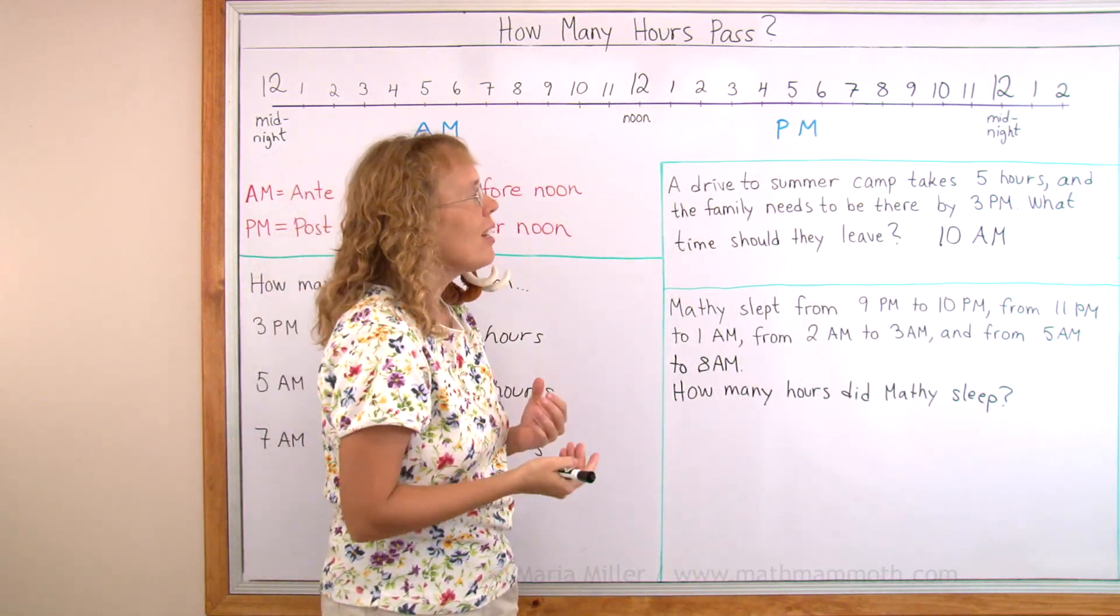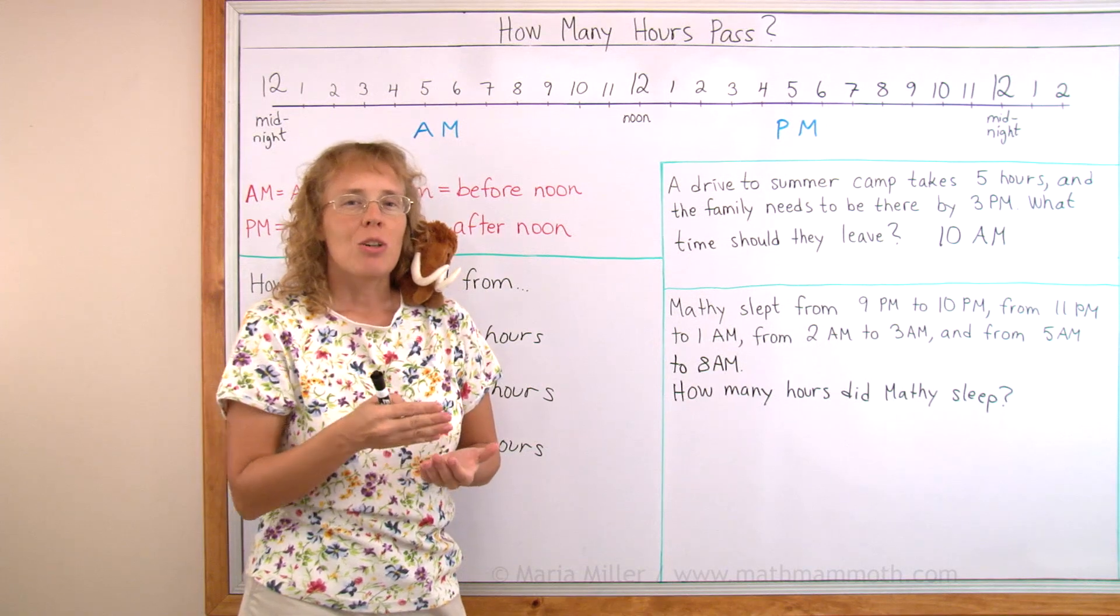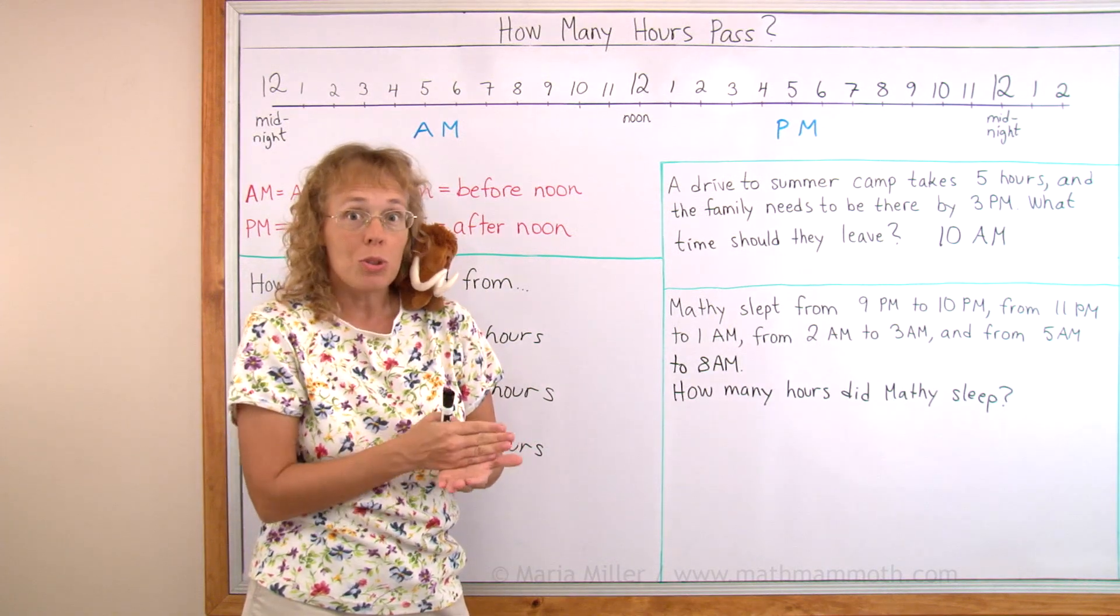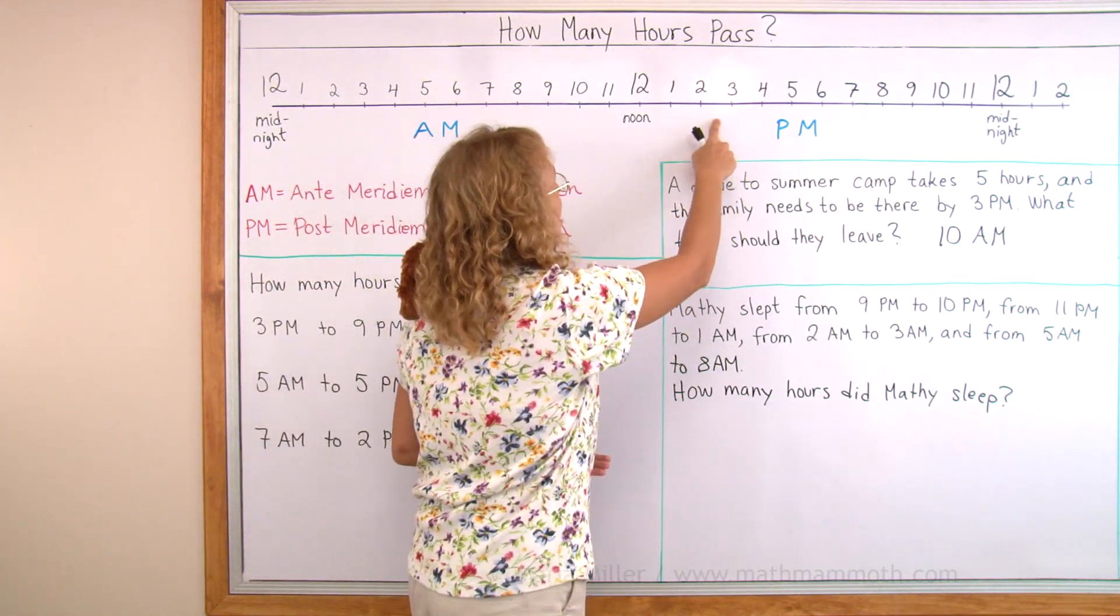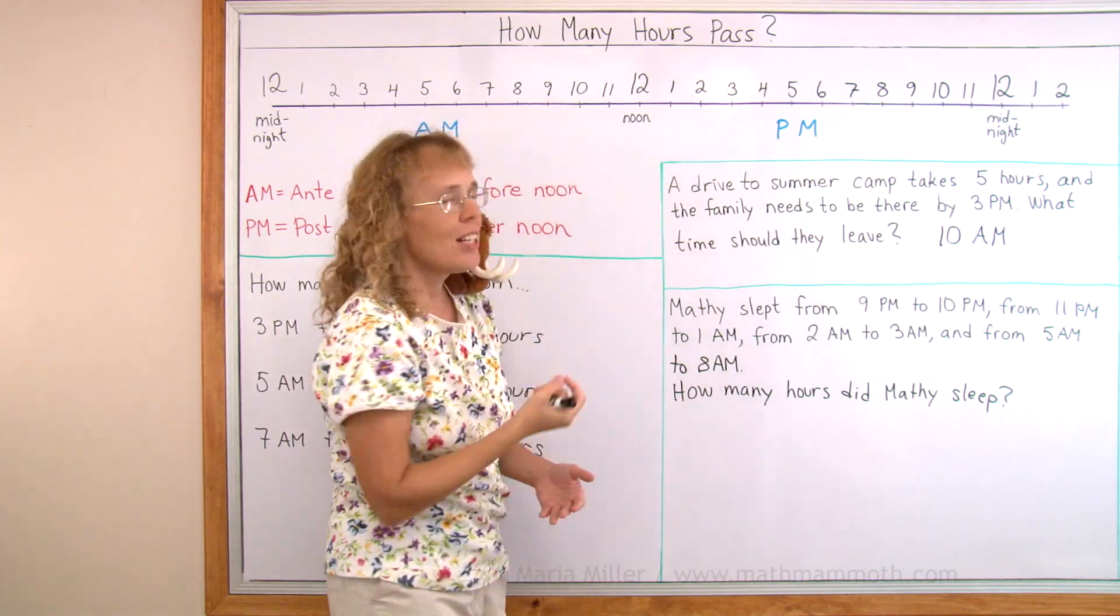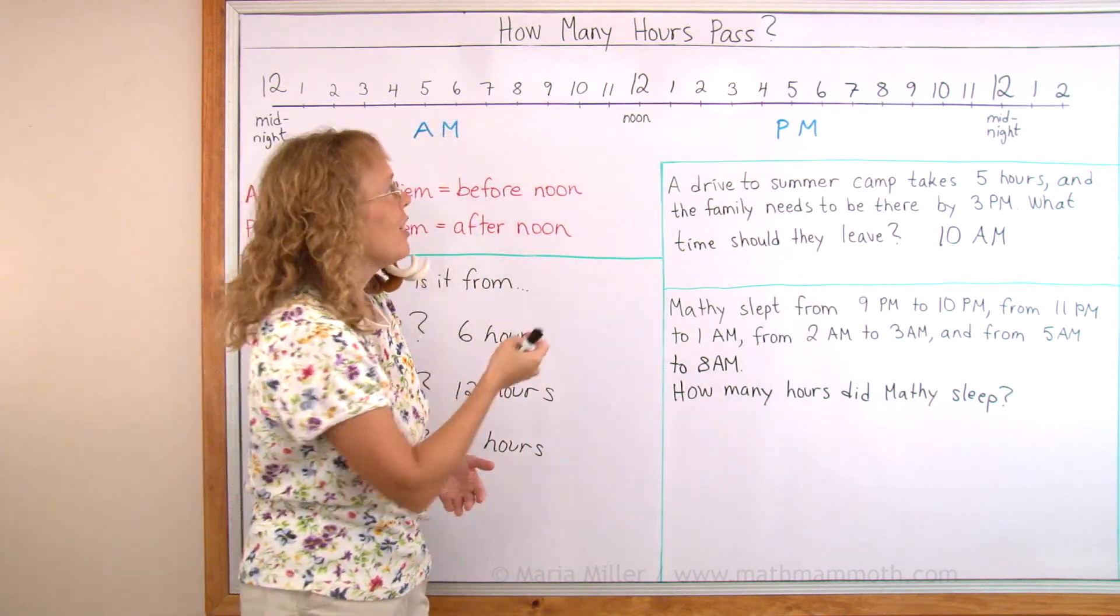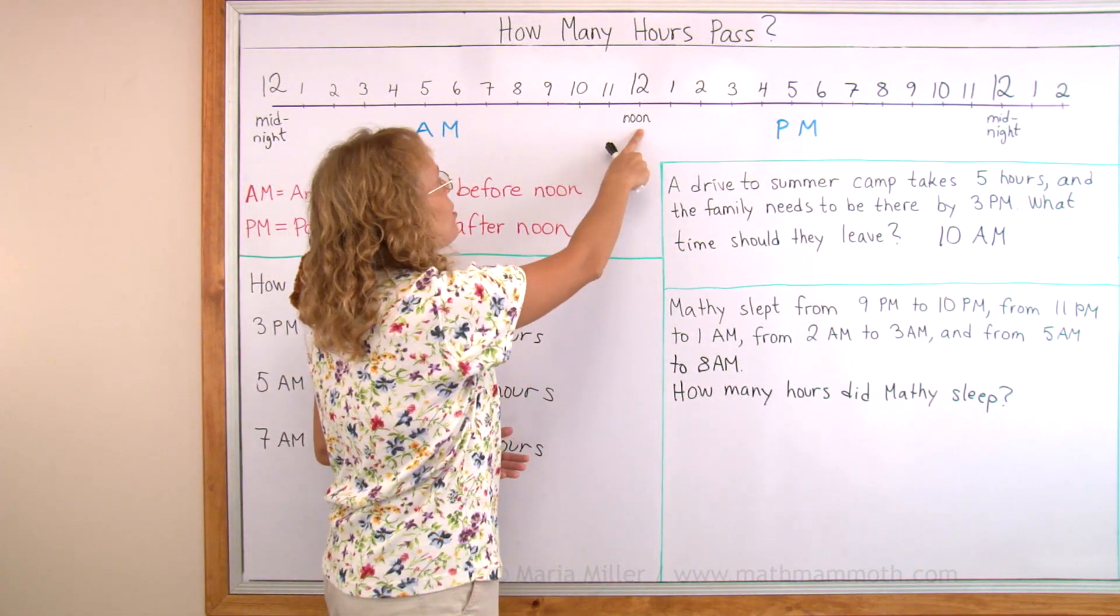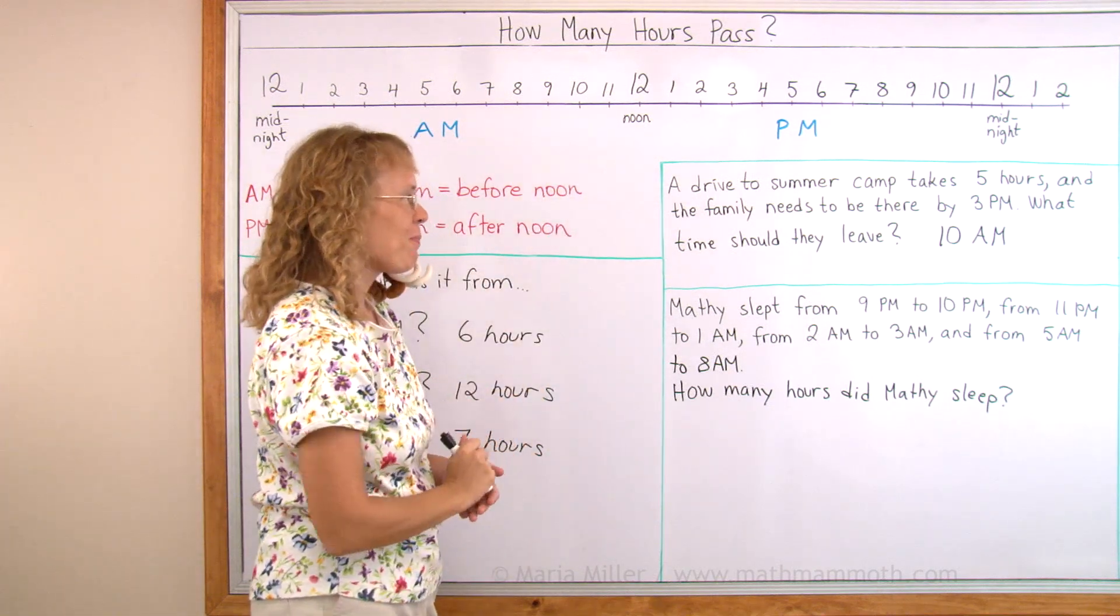If you don't have a timeline, then you would want to think 3 PM, go 3 hours backwards to noon. From 3 PM, 3 hours backwards to noon, and then go 2 hours more backwards. From 12, take away 2. 12 minus 2 is 10. In two parts.